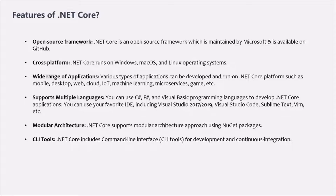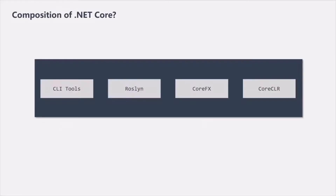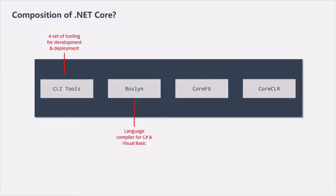Now let's quickly look at the main components of the .NET Core framework. There are four important components. The CLI tool is a command line interface that provides tooling for development and deployment. Roslyn is the language compiler for C# and Visual Basic. CoreFX is a set of framework libraries. CoreCLR is a JIT-based CLR, where CLR stands for Common Language Runtime and JIT stands for Just-In-Time compiler.